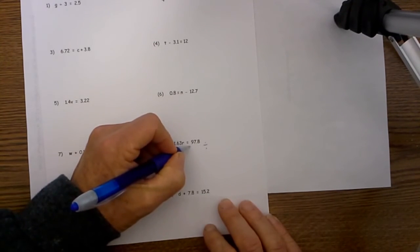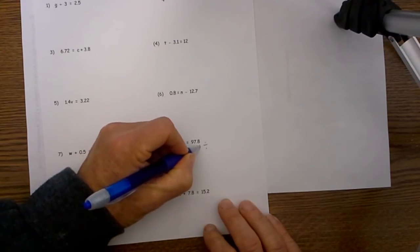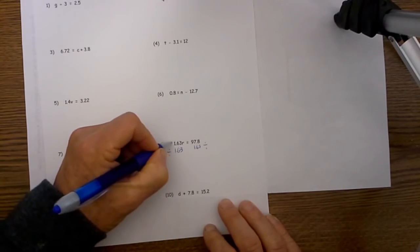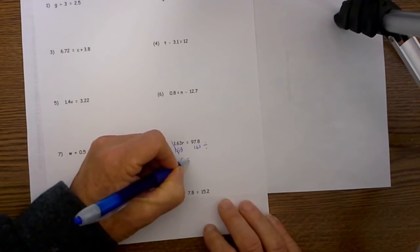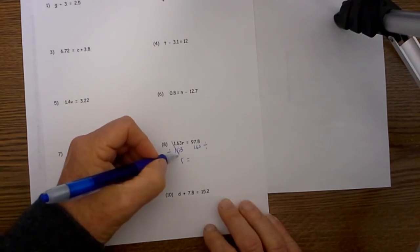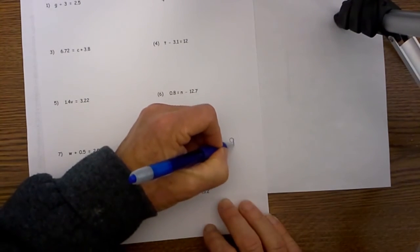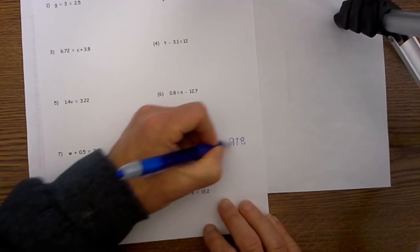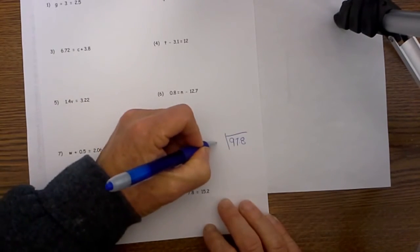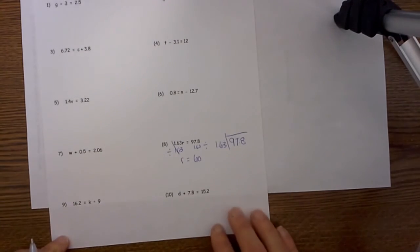So we will divide 97.8 by 1.63 and the 1.63 will cancel. That is what we are left with r, and 97.8 divided by 1.63 is 60. To set that up you would do 97.8 divided by 1.63 and that equals 60.